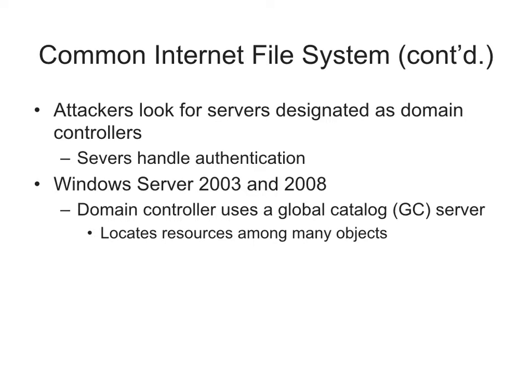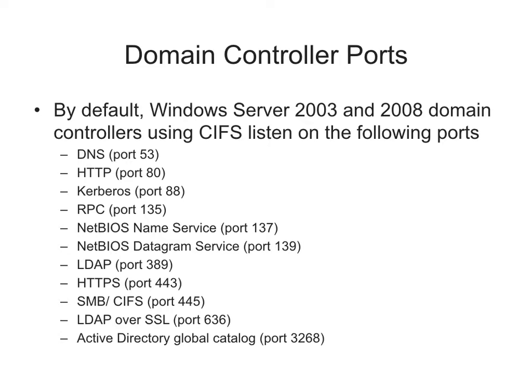Windows Server 2003 and later has a Global Catalog server that finds resources — sort of an enhancement of Active Directory. Domain controllers are easy to spot because they're always listening on a ton of ports: 135, 137, 139, usually 53, and 3268 for the Global Catalog. It's very easy to spot domain controllers, and every Windows network has to have one — without one you have a workgroup and have to maintain each machine separately.